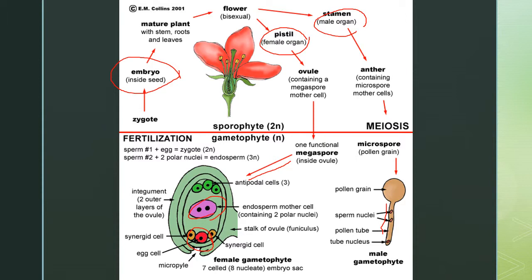One sperm fertilizes the egg to make the zygote that develops into the embryo — sperm plus egg, both haploid, equals a diploid zygote. The other sperm fertilizes the polar nuclei — haploid sperm plus diploid polar nuclei equals a triploid endosperm. The endosperm provides nutrition to the embryo while it's growing.